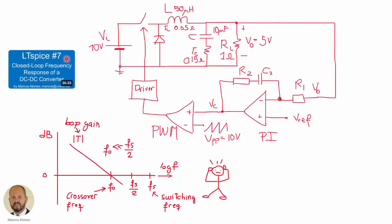In our previous video LTS5 number 7, we talked about closed loop frequency response of a DC-DC converter. We presented a buck converter operating in closed loop in which we use a PI compensator, a PWM modulator, and a driver to drive the switch of the converter. In that video we explained how to design the PI compensator and we saw the response of the loop gain versus frequency.